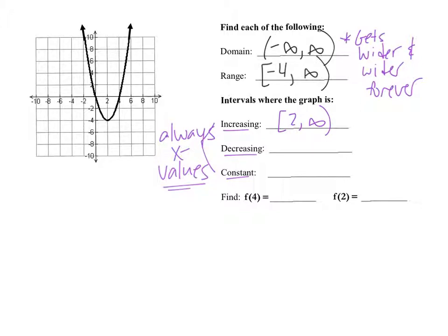Where is the roller coaster decreasing — going down? Picture the roller coaster traveling along this curve going down. This arrow indicates it started way up at negative infinity — negative because all the X values over there are negative, not Y values. It's decreasing from the left forever until it gets to X equals 2. So decreasing is negative infinity to 2.